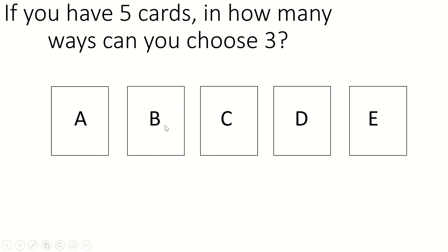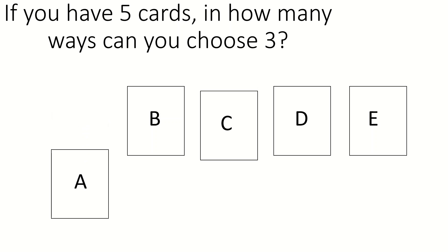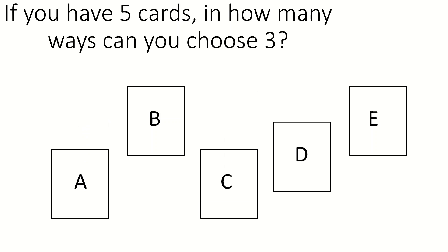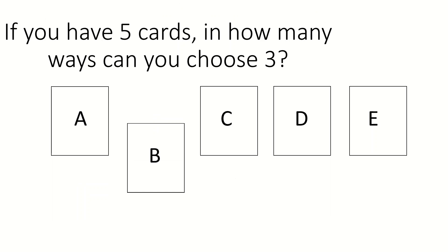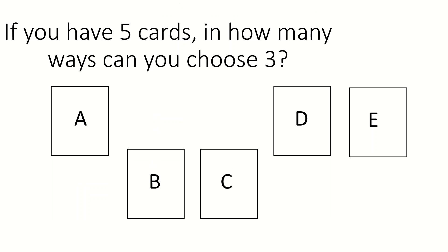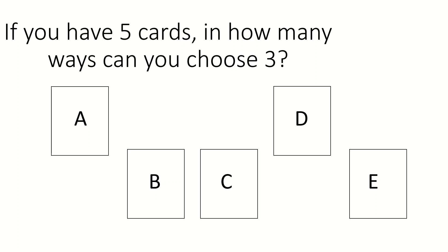I'm going to start with a question. If you have five cards — cards A, B, C, D, and E — in how many ways can you choose three? So for example, one choice of three might be A, C, and D. That's choosing three cards of the five, but you could also choose, for instance, B, C, and E. That would be a different three cards. The question is: in how many ways can you select a different set of three cards from the five? And we call this five choose three.